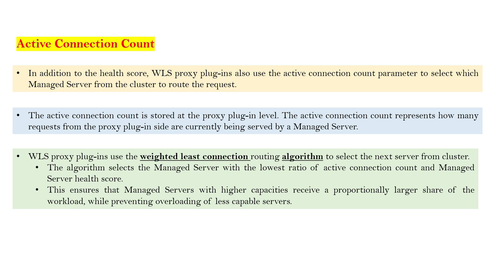The WLS proxy plugin uses the weighted least connection routing algorithm to select the next server from the cluster. By default, OHS is configured with the round-robin algorithm, but for this new functionality, a new algorithm called weighted least connection has been introduced, which you must specifically enable in your configuration. This algorithm selects the managed server with the lowest ratio of active connection count to managed server health score. OHS checks both the total active connection count and the health score to decide which backend managed server to send the request to.